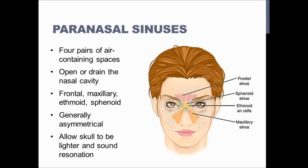The conchae slow and stir the air. Fluid from your lacrimal glands — your tear ducts — and mucus from your paranasal sinuses drain through your nose and help to trap particulate matter. You may have noticed that if you're crying, you end up getting sniffly as well, because your tear ducts drain into your nose. Whatever doesn't drain down your nose goes down your throat and into your stomach, where the stomach acid will destroy any bacteria.